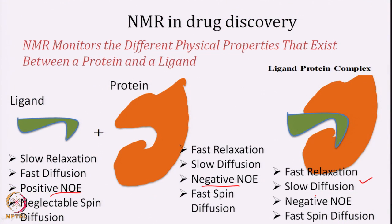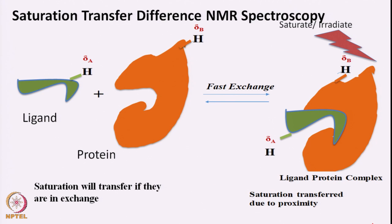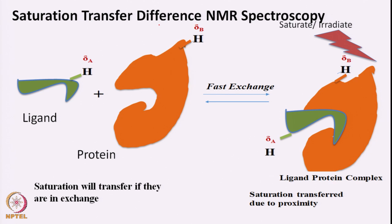Now suppose this ligand interacts with protein and makes a complex. The resultant complex is going to be big. So if this resultant complex is big, we have fast relaxation — it is similar to a protein. It will have slow diffusion, negative NOE, and fast spin diffusion. It will acquire all the properties of a protein molecule. This concept is used in an experiment called Saturation Transfer Difference NMR spectroscopy, or STD for short.